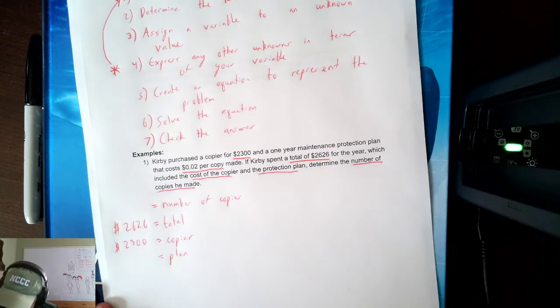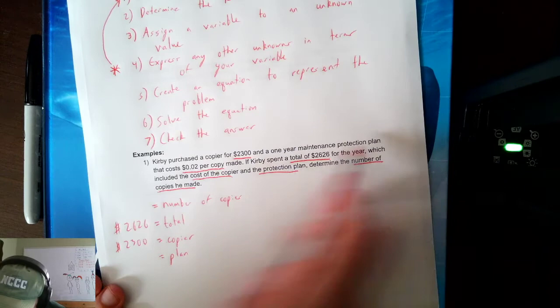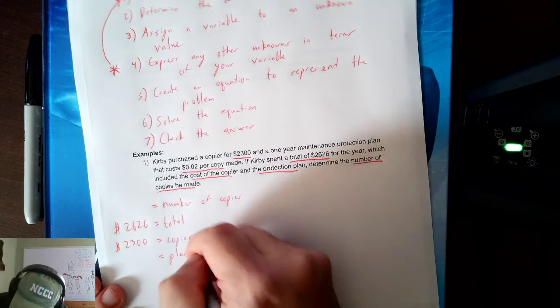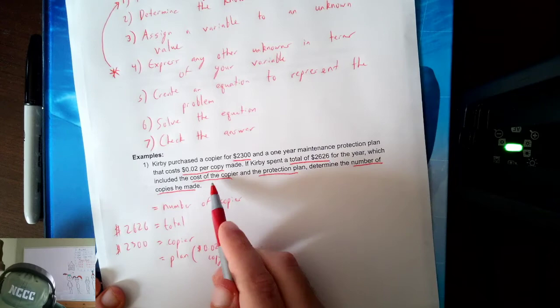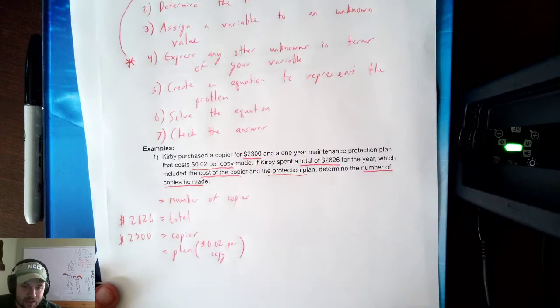I'm going to read again and make sure I got everything. Copier — got it. Plan — got it. Two cents per copy made, which is $0.02 per copy. Spent a total — got that. So I have everything from the question written down. I have all the important information identified.